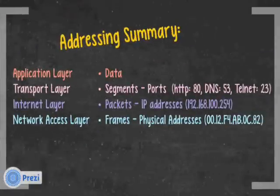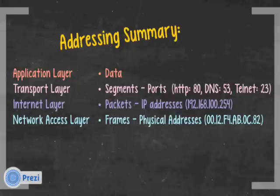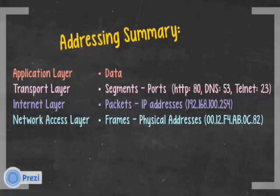Addressing summary: application layer has data with no addressing. Transport layer has segments; addressing uses ports — HTTP is port 80, DNS is port 53, Telnet is port 23. Internet layer has packets with IP addresses; an example is 192.168.100.254. Network access layer has frames with physical addresses, also called MAC addresses — an example is 00.12.F4.AB.0C.82, which uses hexadecimal numbers.